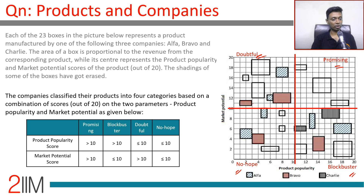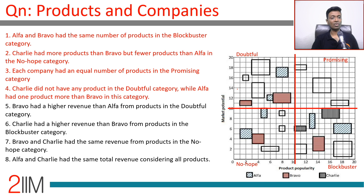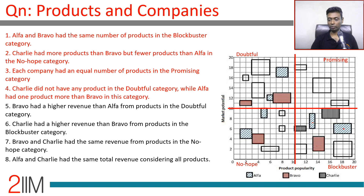Alpha and Bravo had the same number of products in the Blockbuster category. Alpha is blue and Bravo is red — there are already two blues and one red. They can't both have more than two since there isn't room. They can't have fewer than two either. So Alpha gets two and Bravo gets two in Blockbuster, leaving Charlie with three — total seven in that category.